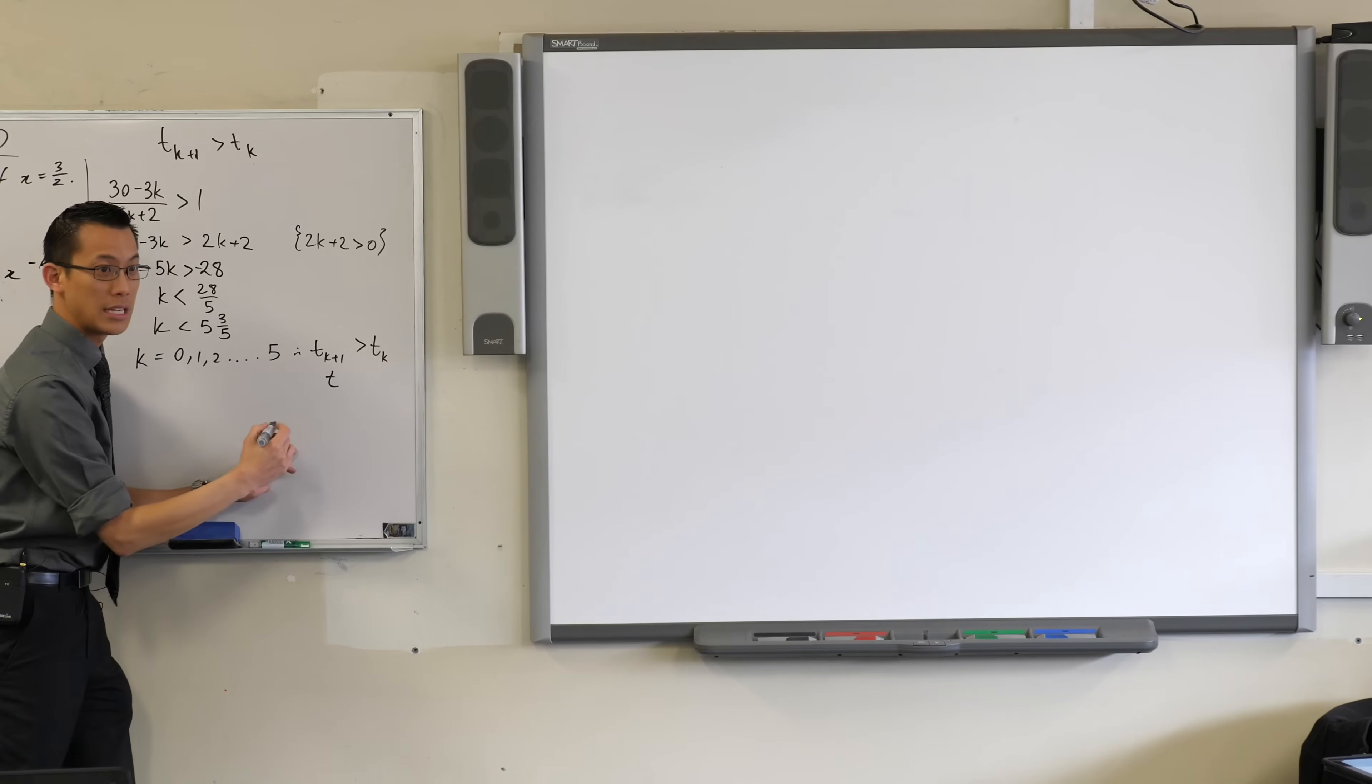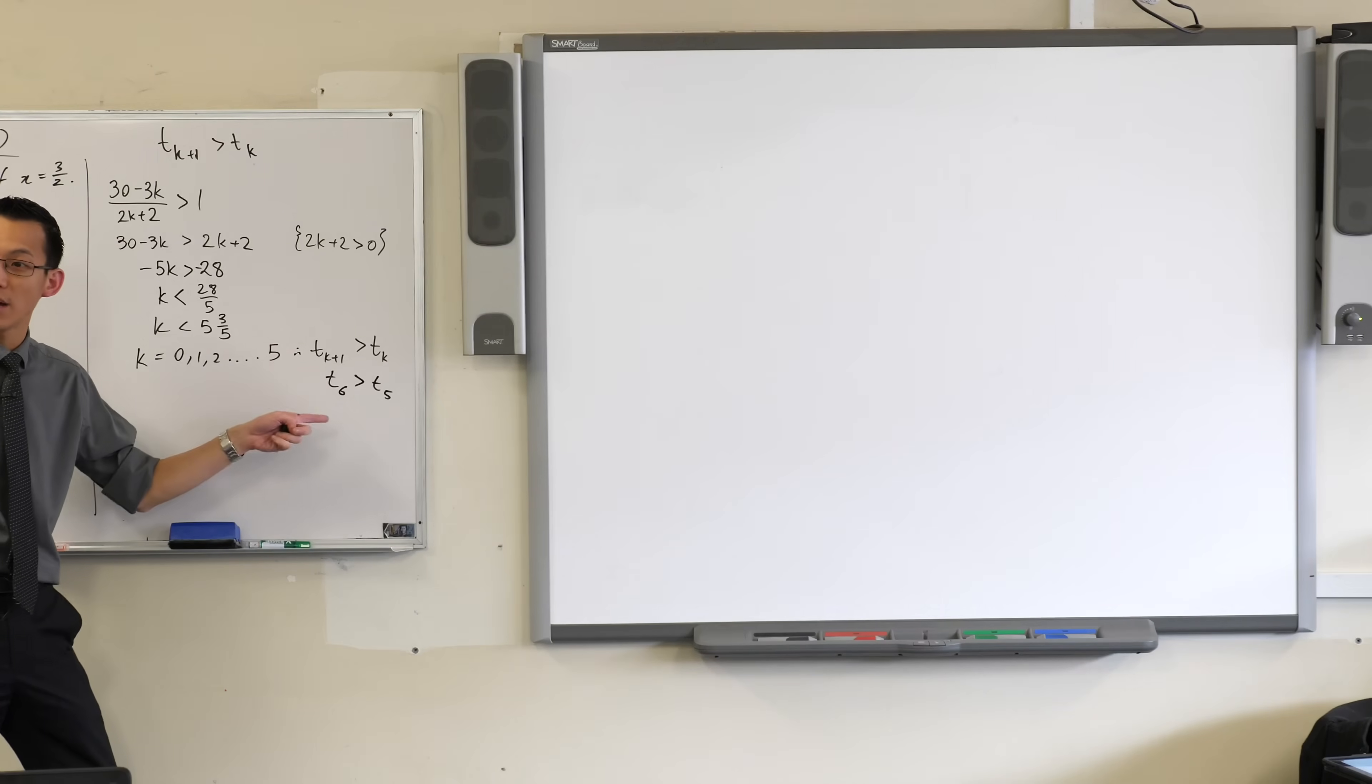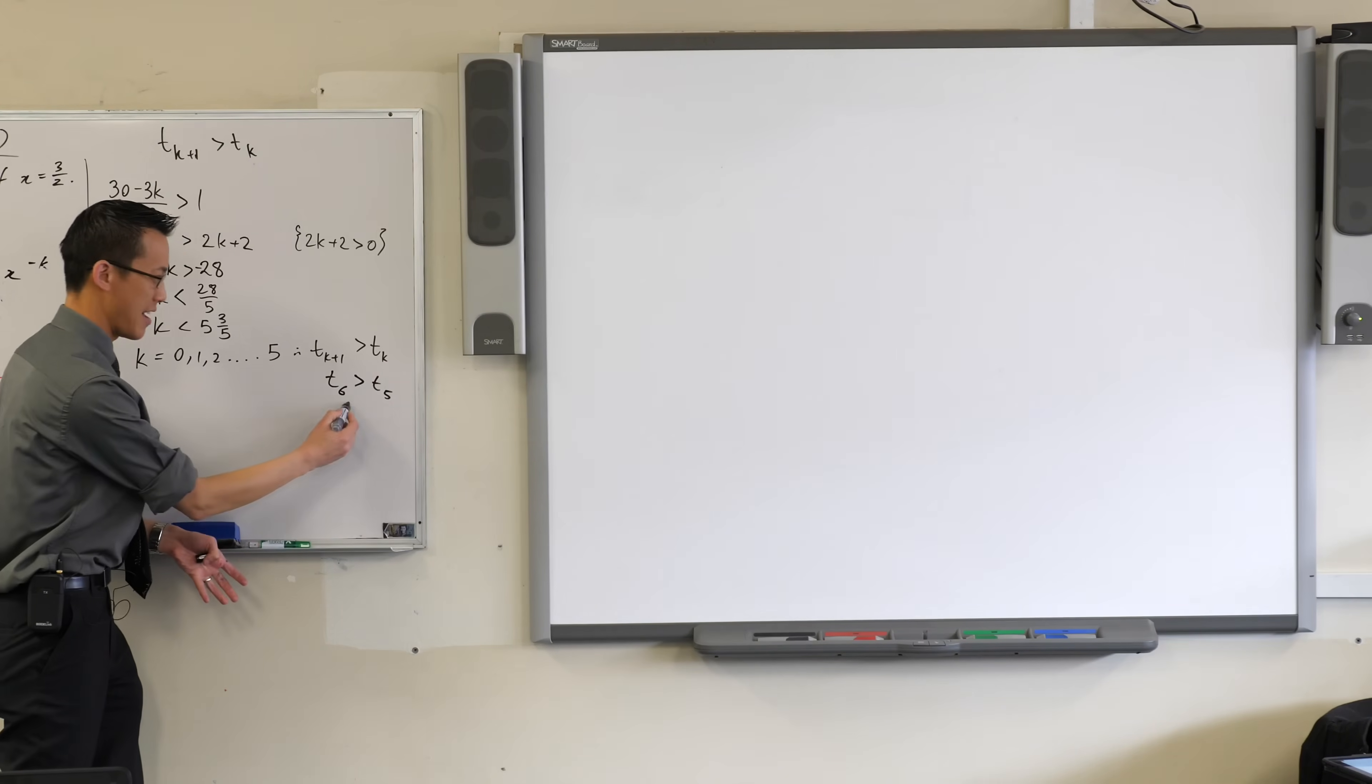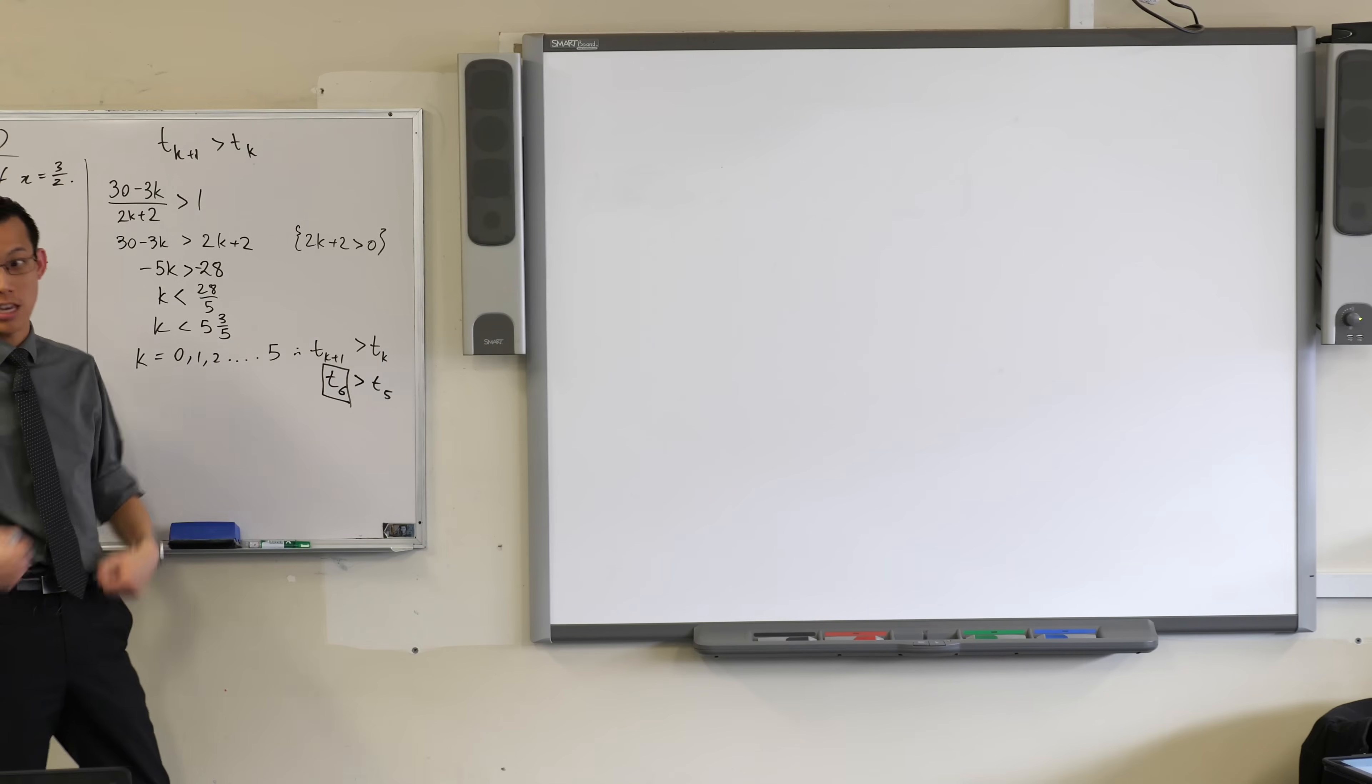t of 6, that's the 5 plus 1, is bigger than t of 5. Now this clearly tells you which one is the biggest one, it's that guy. Once you go past this, this inequality is no longer true. So term 7 doesn't keep on growing in its merry way, it will be smaller than t6.